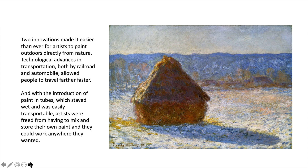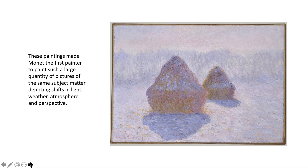There were two innovations that made it easier than ever for artists to paint outdoors, directly from nature. Technological advances in transportation — by railroad and by automobile — allowed people to travel farther and faster to get where they wanted to be. And with the introduction of paint in tubes, factories were producing paint; artists didn't have to make it themselves. This paint stayed wet in the tubes and was easily transportable, so artists were freed from having to mix and store their own paint and could work anywhere they wanted. These paintings made Monet the first painter to paint such a large quantity of pictures of the same subject matter, depicting shifts in light, weather, atmosphere, and perspective — he's moving around the field, viewing the haystacks in different lighting conditions, from different angles, heights, and perspectives.